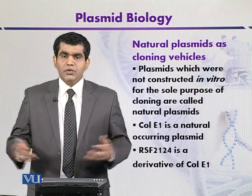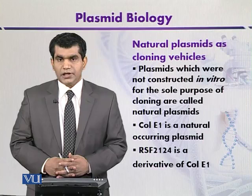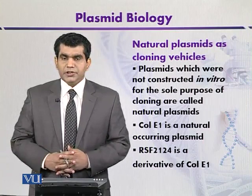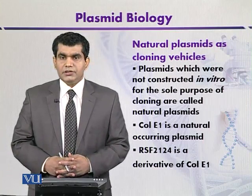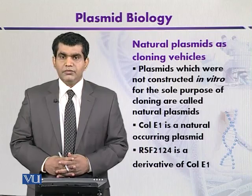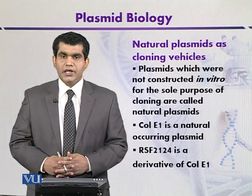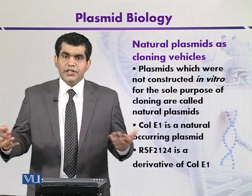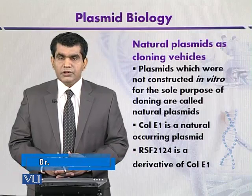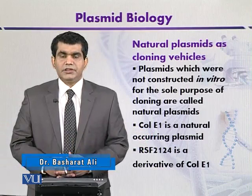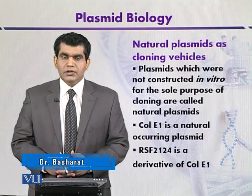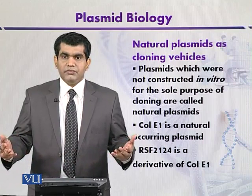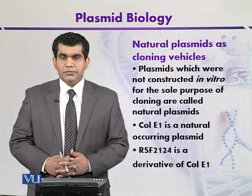We can quote different examples of natural plasmids, like ColE1. It is a natural plasmid and it carries a selectable marker for the production of a bacteriocin called Colicin E1. Bacteriocin is a proteinaceous toxin and can sometimes be categorized under the heading of antibiotics. One example of bacteriocin is Colicin E1, which is carried by the ColE1 plasmid.